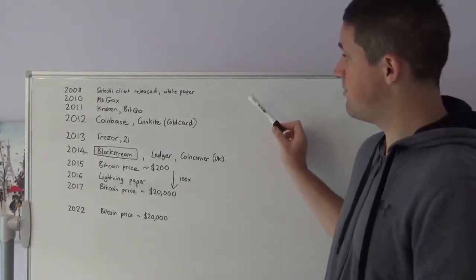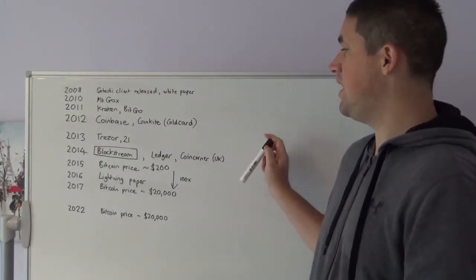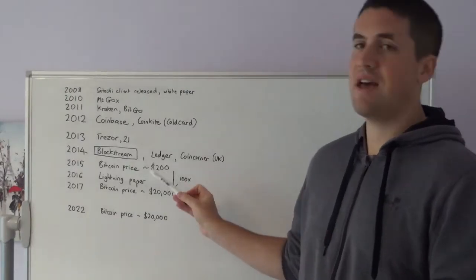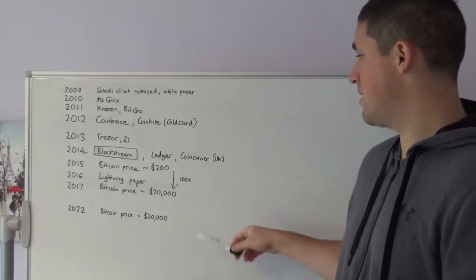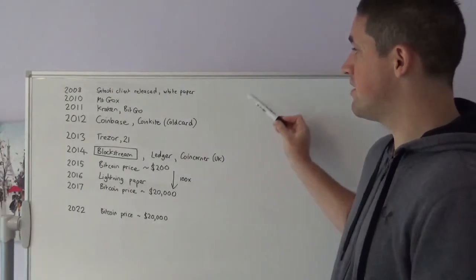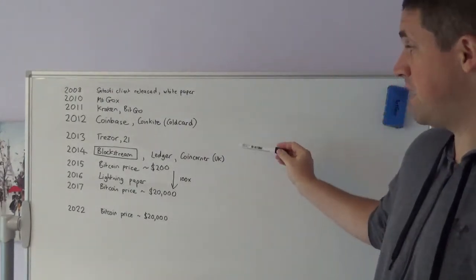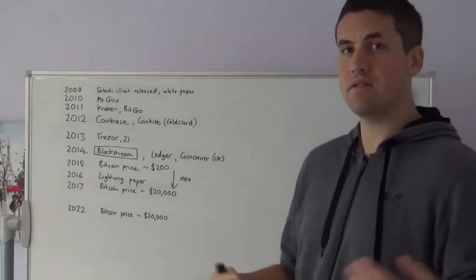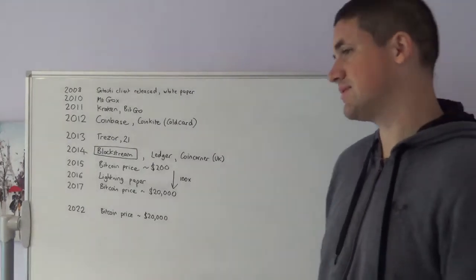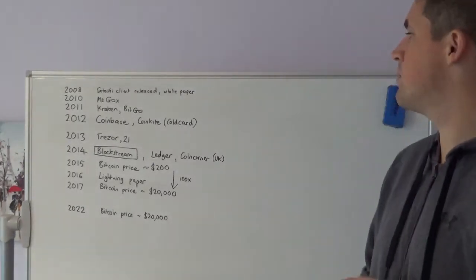All these companies were formed years in advance of the Bitcoin price ever reaching $200. Today the Bitcoin price is $20,000. All of these companies played a big role in getting the Bitcoin ecosystem off the ground and as a proxy that Bitcoin price is moving up.